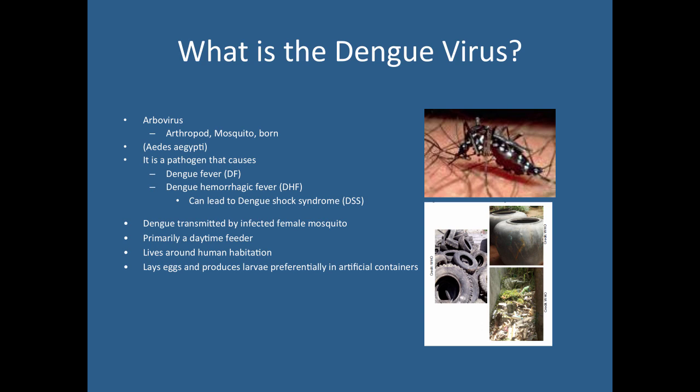Dengue is transmitted exclusively by the female mosquito, as is the case with most mosquito-borne diseases — they're the only ones that really bite. Unlike malaria, it's primarily a daytime feeder. Think about the different types of prevention strategies you might incorporate: bed nets may not work in this situation because people are not typically in bed during the day.